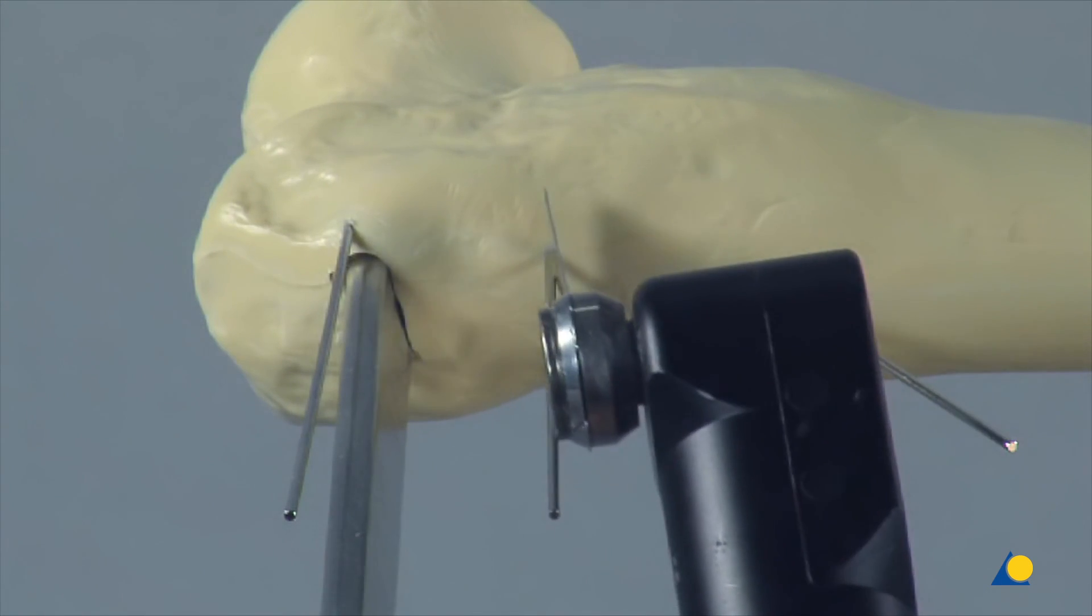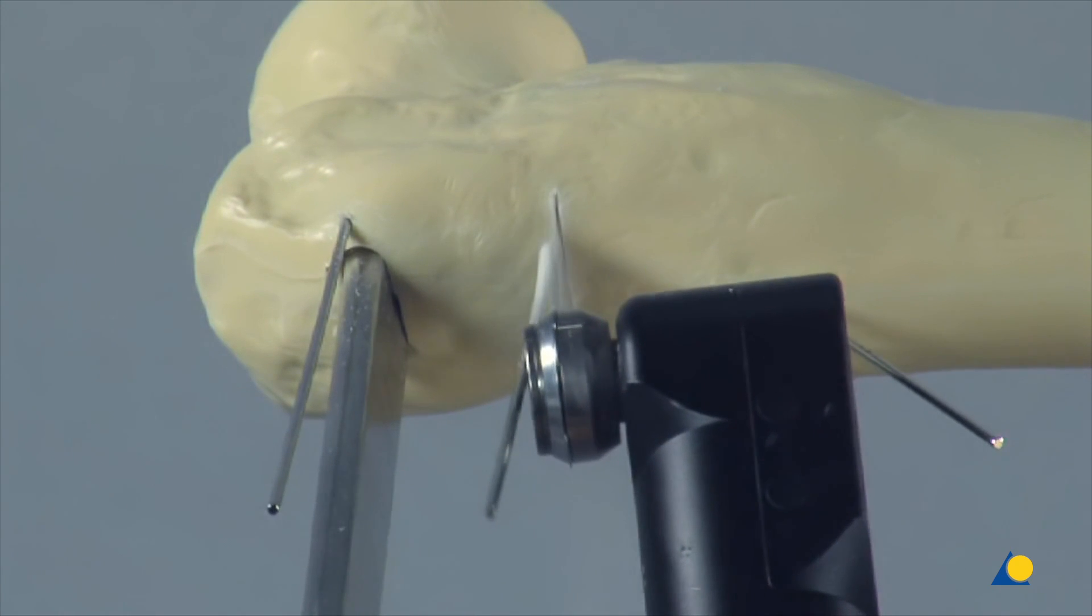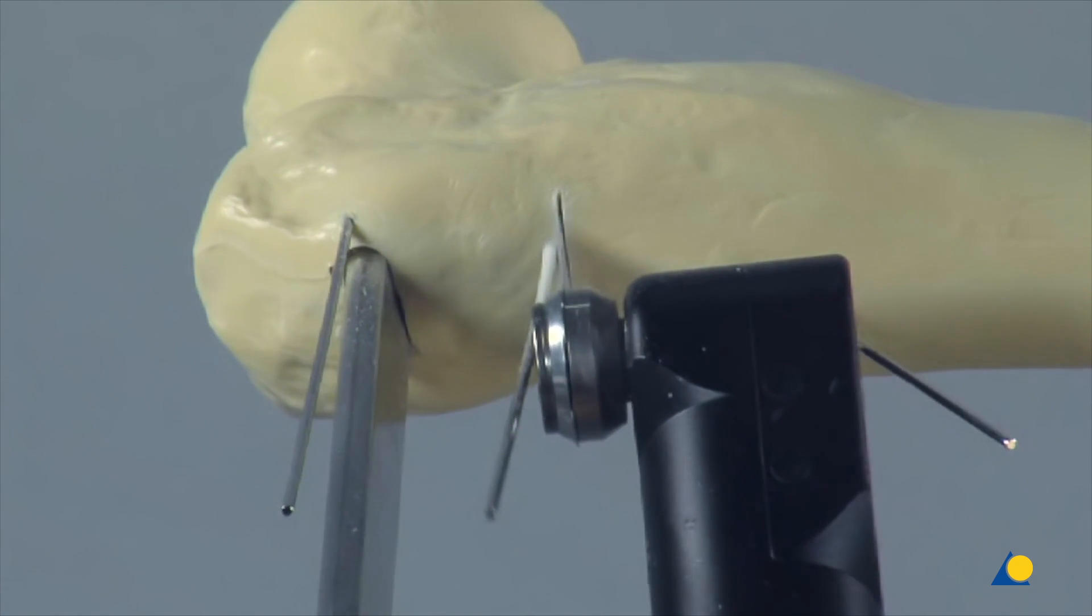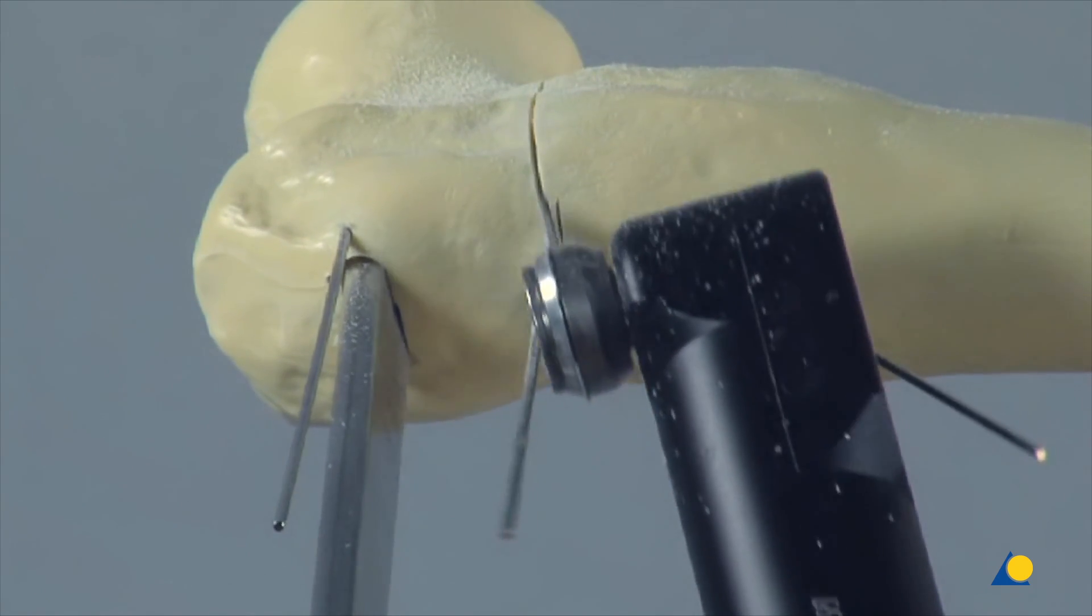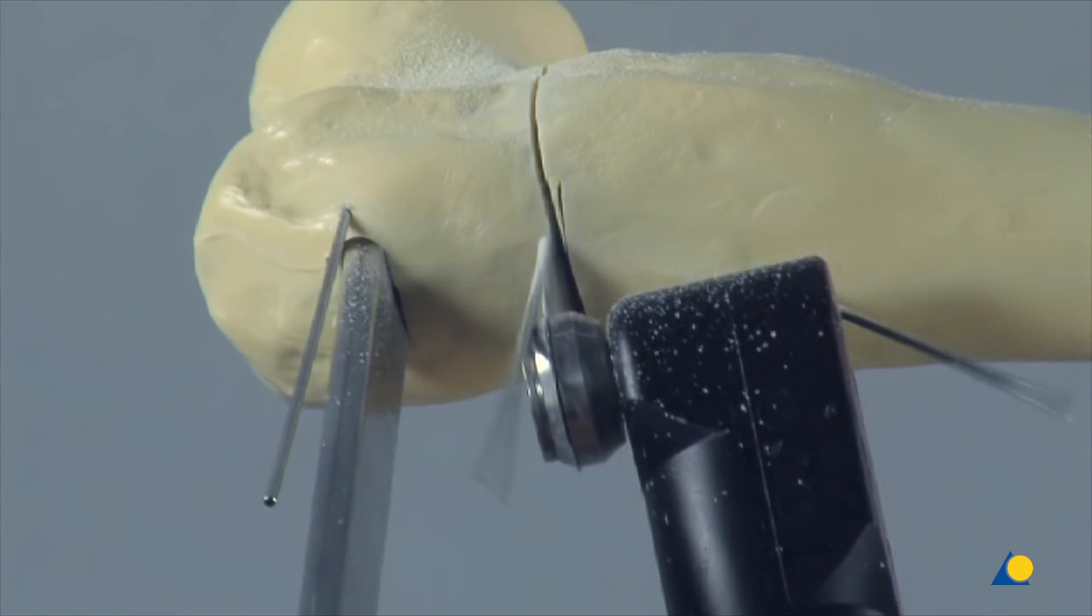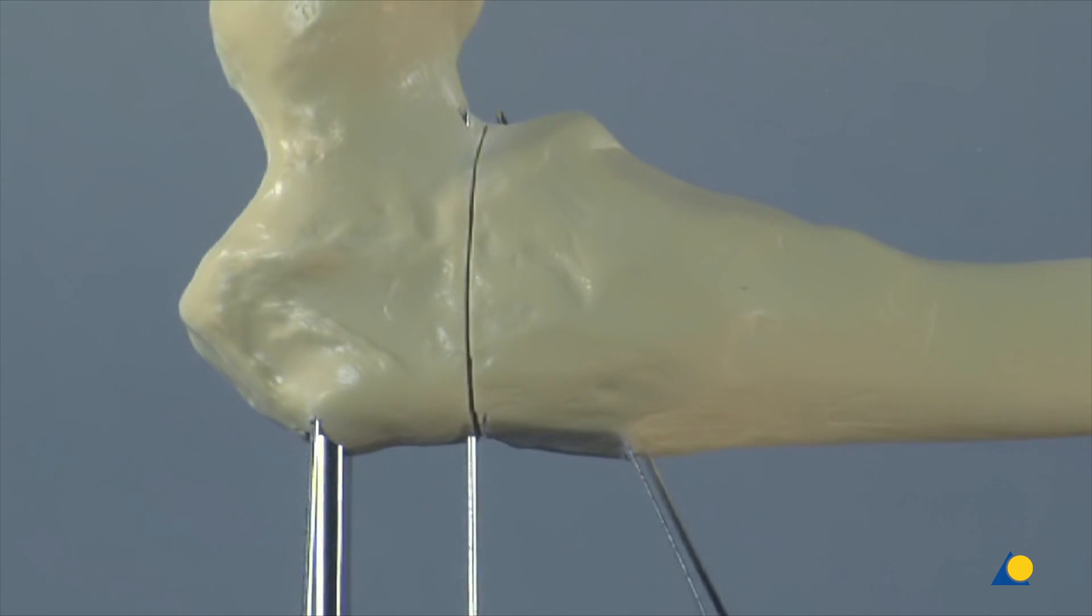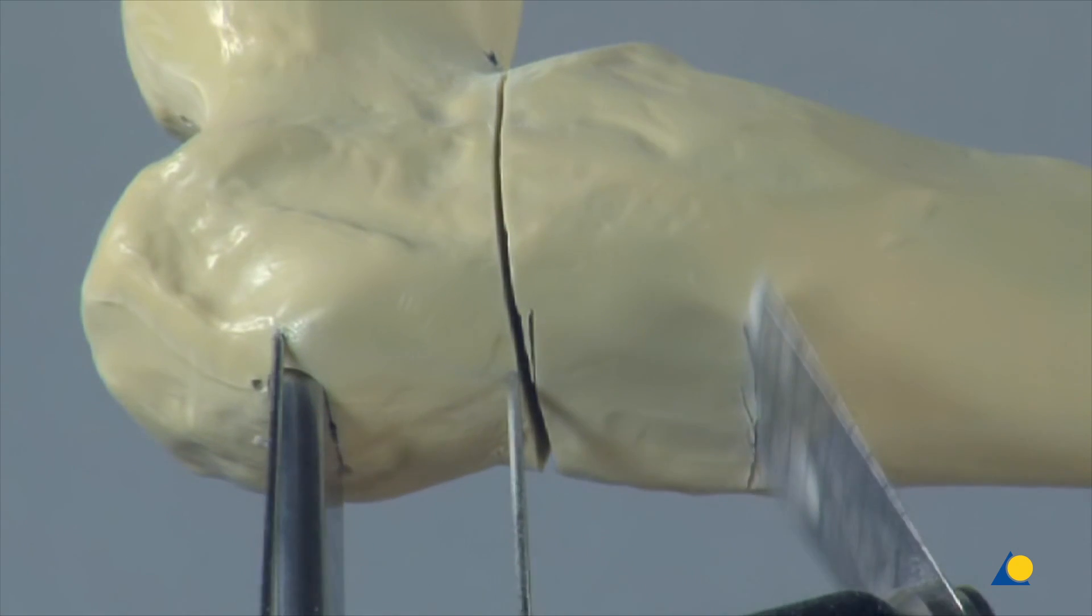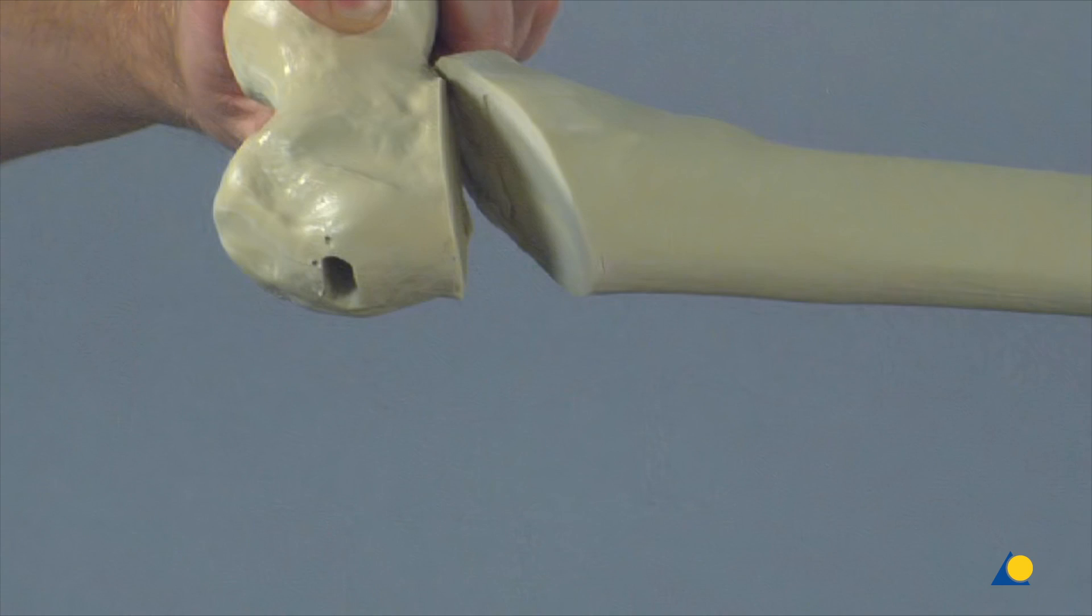The proximal osteotomy cut is made using the K-wire as a guide. The second osteotomy cut is made perpendicular to the axis of the femoral shaft. The correction angle between the first and second osteotomy cuts is achieved.